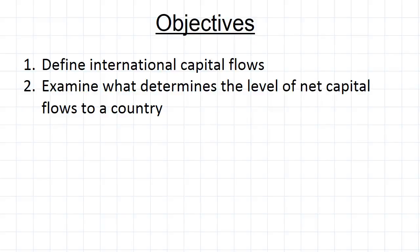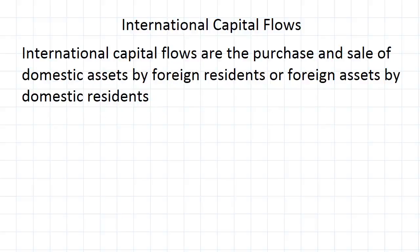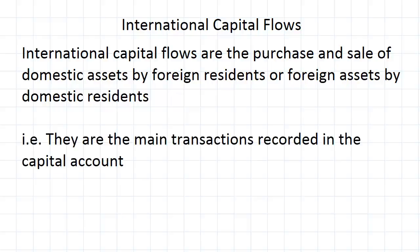Let's talk now about international capital flows — first quickly defining exactly what they are and then talking about how the level of them ends up getting determined. International capital flows are just the purchase and sale of domestic assets by foreign residents, or foreign assets by domestic residents. This should sound very familiar — essentially it was just the main component of the capital account, not everything in the capital account but the biggest thing. Quite simply, they're transactions involving foreign investment.